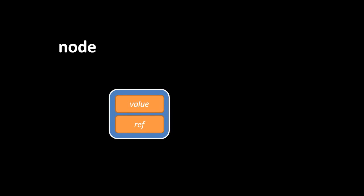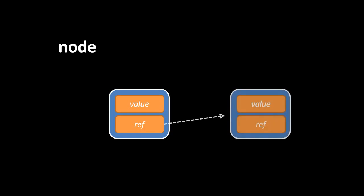Aside from arrays and records, perhaps the simplest data structure is what's called a node. A node is a record with two elements: a value and a reference, which may point to another node. So for example, here we have two nodes, with the reference of the one on the left pointing to the starting address of the other node in memory. The point of a node is to represent a value, but potentially associate that value with some other value, as pointed to by the reference.